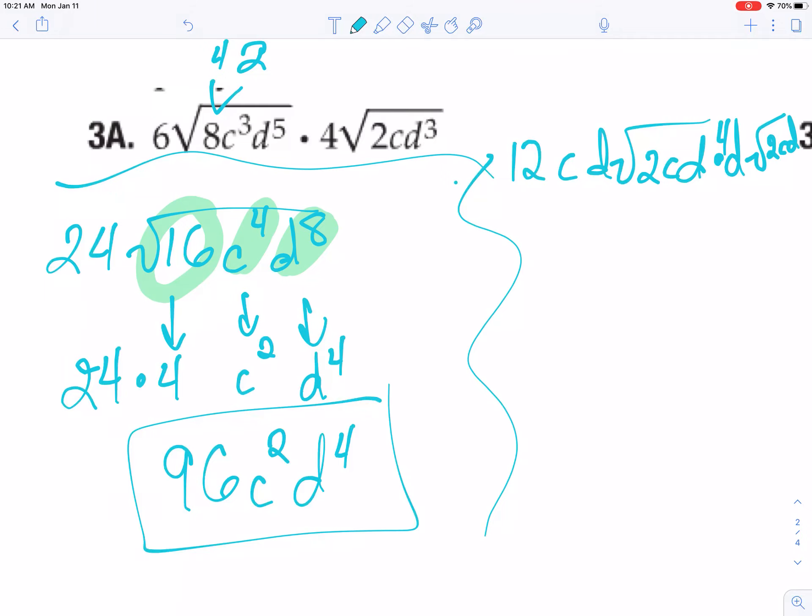You multiply everything. 4 times 12 is 48. You have a c. You have a d squared. Hang on, I forgot a squared here, so that should have actually been d cubed.